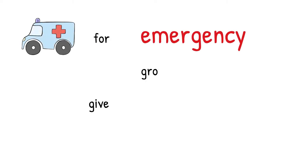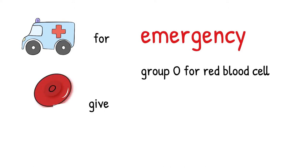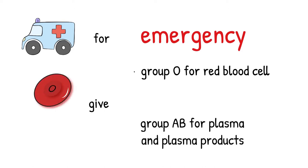However, if the patient needs blood emergently, do not refuse giving blood because you can always give group O for RBC or group AB for plasma and plasma products. I will talk more about blood product choices in emergency case at a later time.